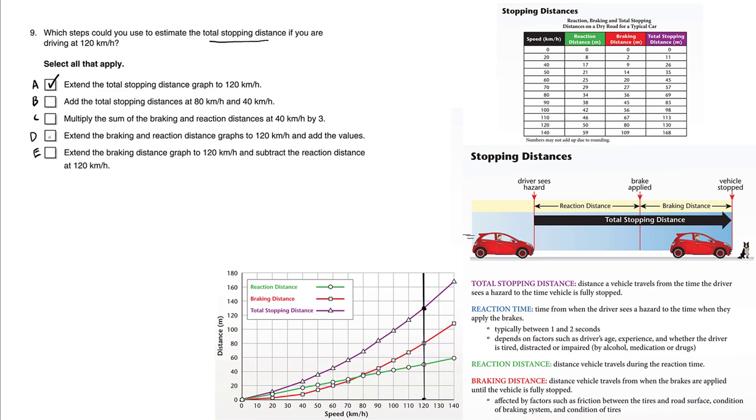Let's jump to the other correct answer. Choice D. Extend the braking and reaction distance graphs also to 120. So we're moving all the way to the right to 120. That's what we're doing by extending. And we're going to add the braking and reaction distance graphs. The braking is going to be red. And the reaction distance is going to be green. Is it really true that adding these,